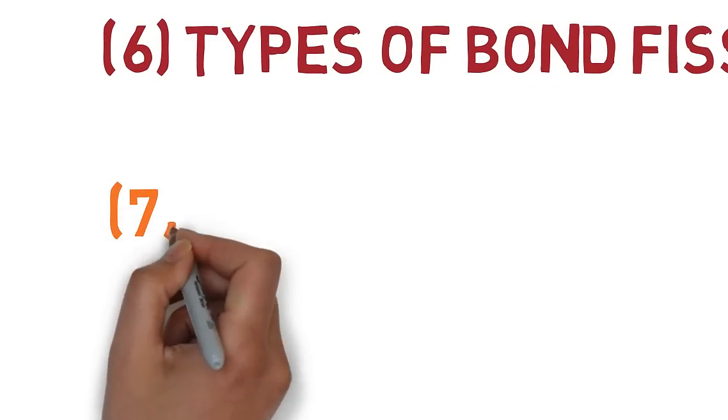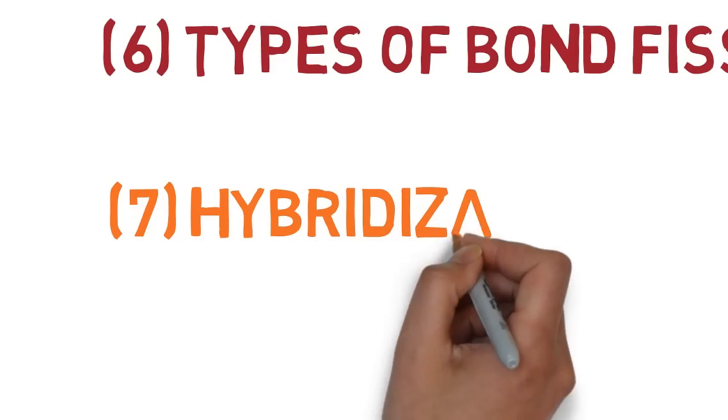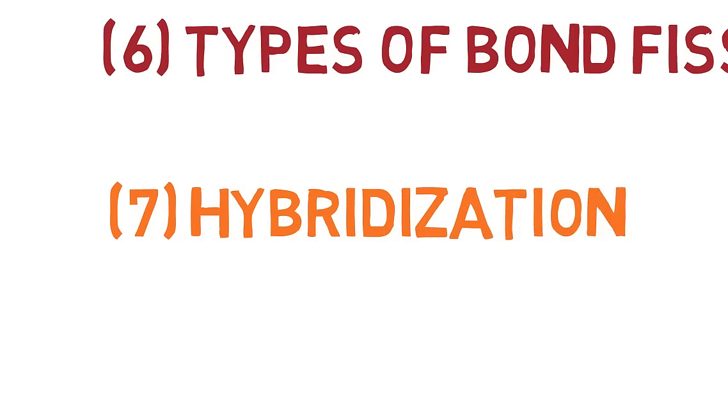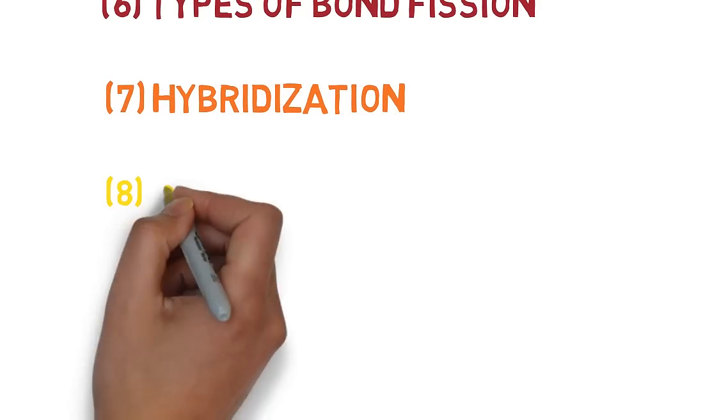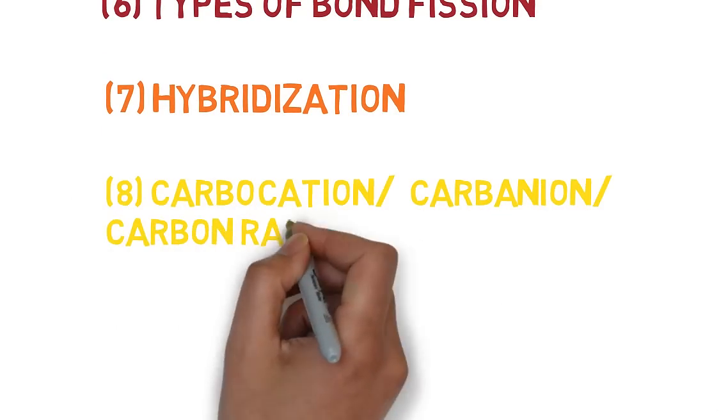Seventh one is a concept of hybridization where we have SP hybridization, SP2 hybridization and SP3 hybridization. Eighth one is concept of carbocation, carbon ion and carbon radical.